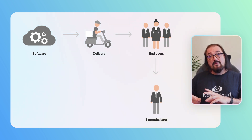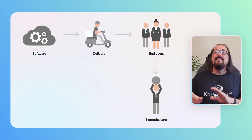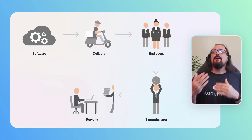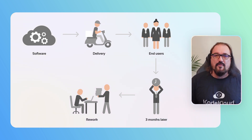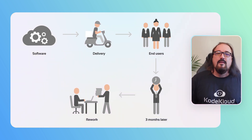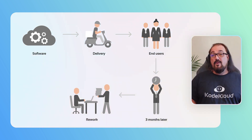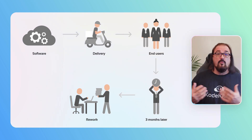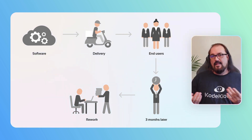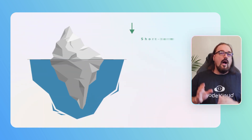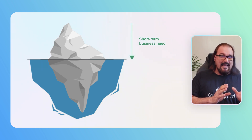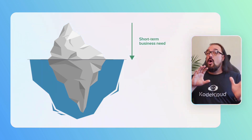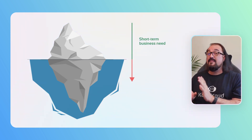And then three months later, the business comes back and you end up rewriting the entire logging section of your code because you rushed it to make that deadline, knowing that you needed more features, more tracing, more observability. So you honored the short-term business need at the cost of some technical aspect.